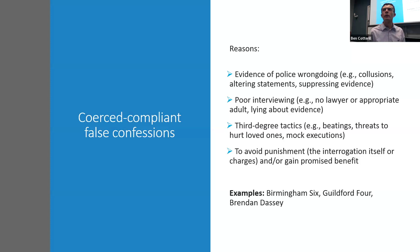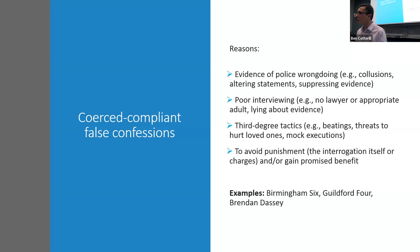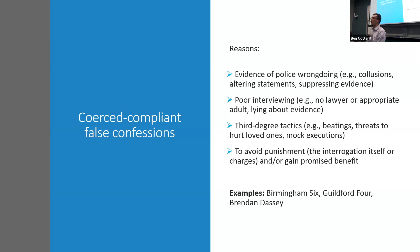The case of Brendan Dassey from the Netflix documentary Making a Murder illustrates pressured compliance. You can watch the actual police interview. Dassey is clearly intellectually impaired, interrogated without a lawyer or appropriate adult, and clearly unaware of the consequences — he thinks he's going back to school after confessing to murder. This tells you he's not fully aware of what's happening.